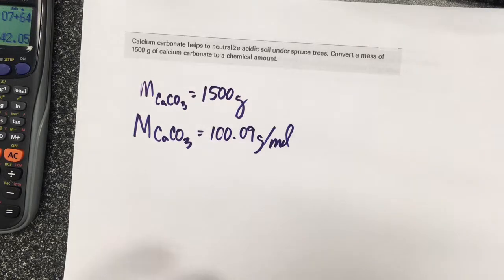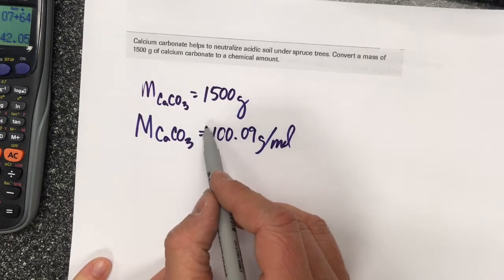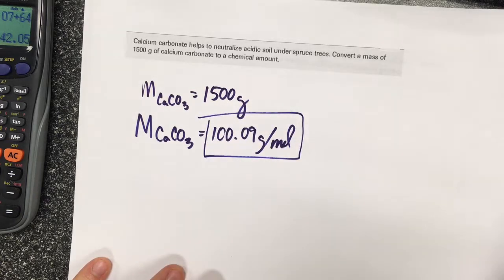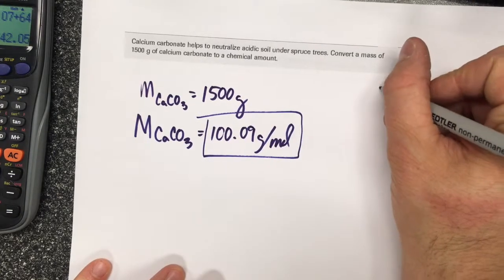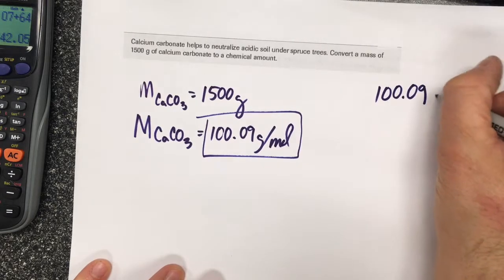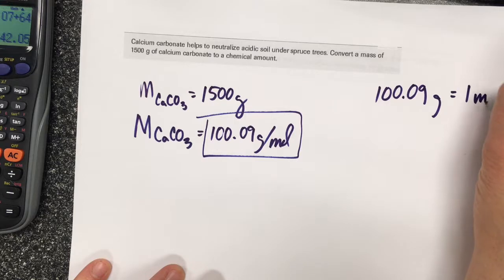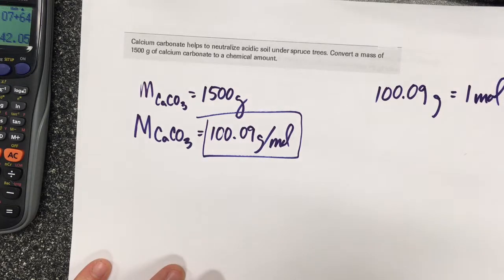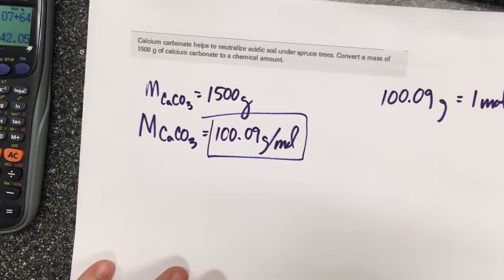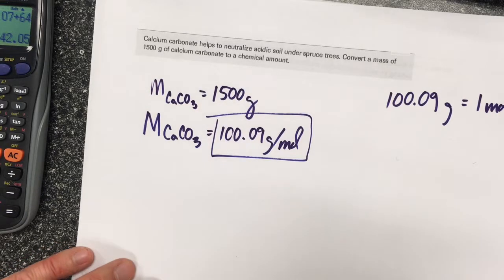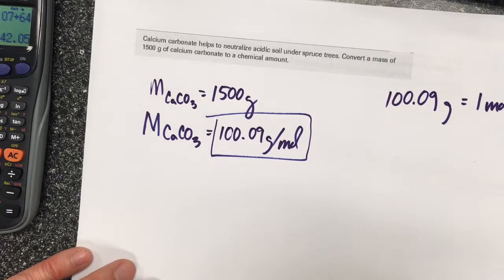If you're not sure how to calculate that, there's a video explaining molar masses. This value is a relationship - for calcium carbonate, 100.09 grams equals one mole, so they're equivalent. We can use them as a conversion factor. One of our ways of calculating the chemical amount is to convert grams into moles using this relationship.